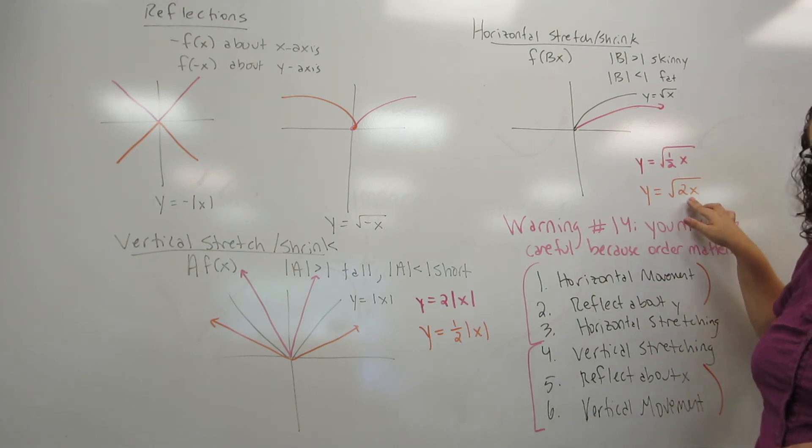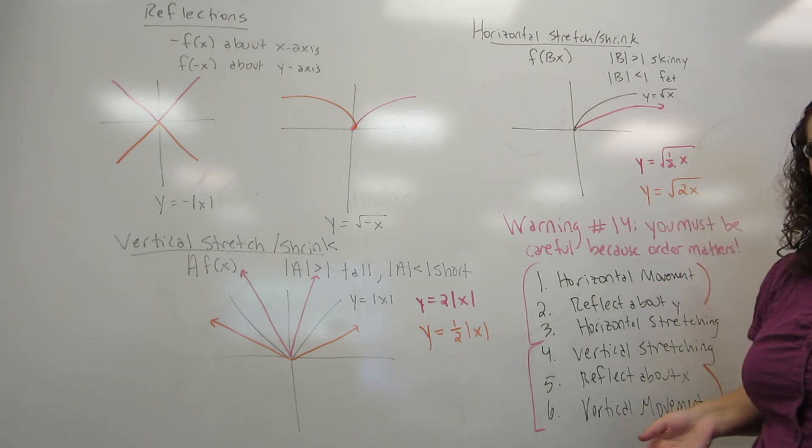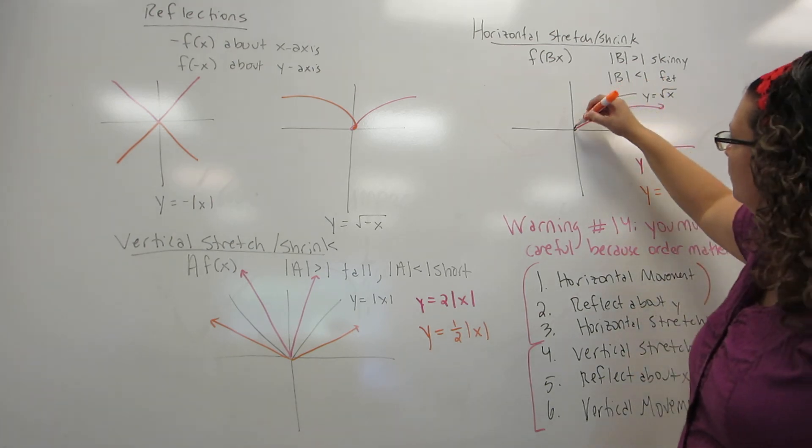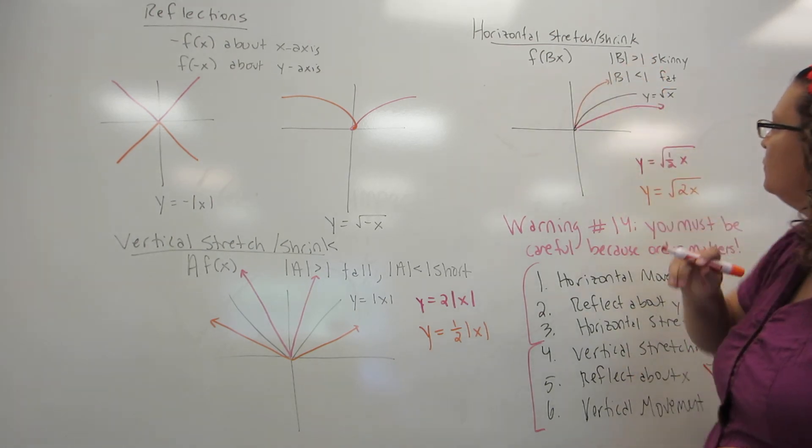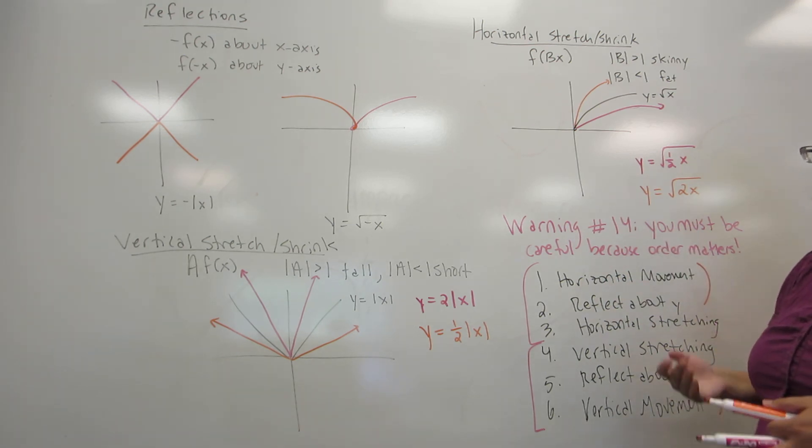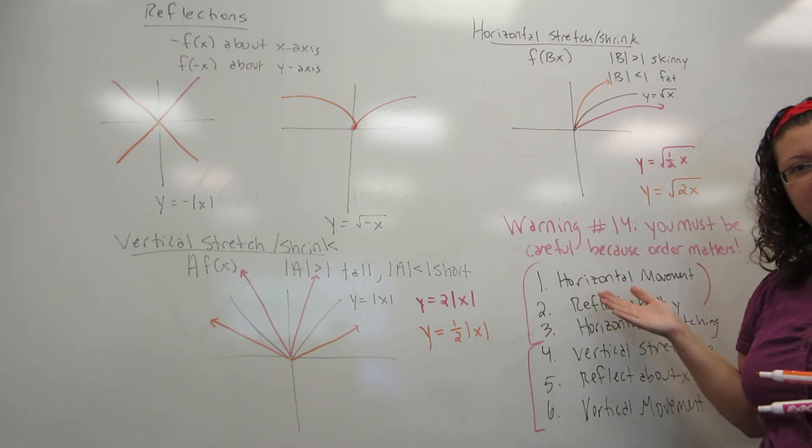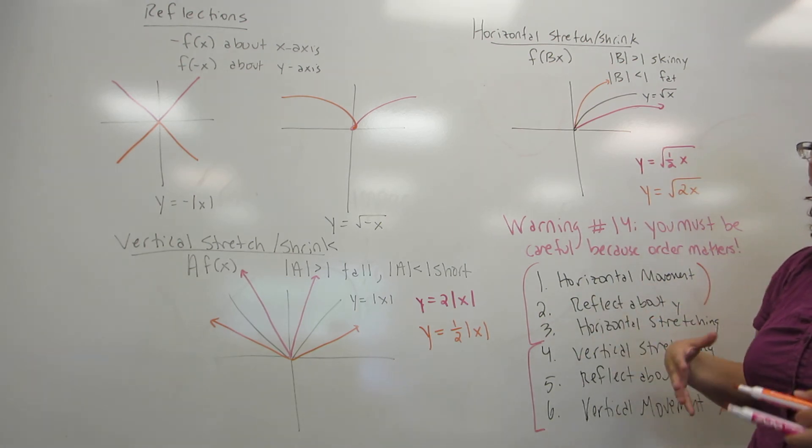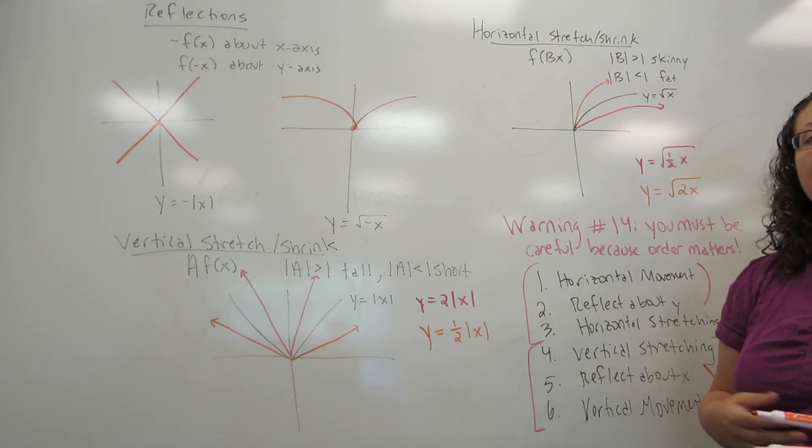When we look at the square root of 2x, this has an effect of making it skinnier by a factor of two. So every x-coordinate is cut in half. You'll notice that fatter also looks like shorter and skinnier also looks like taller. You have to be very careful though, because they are not by the same scale.